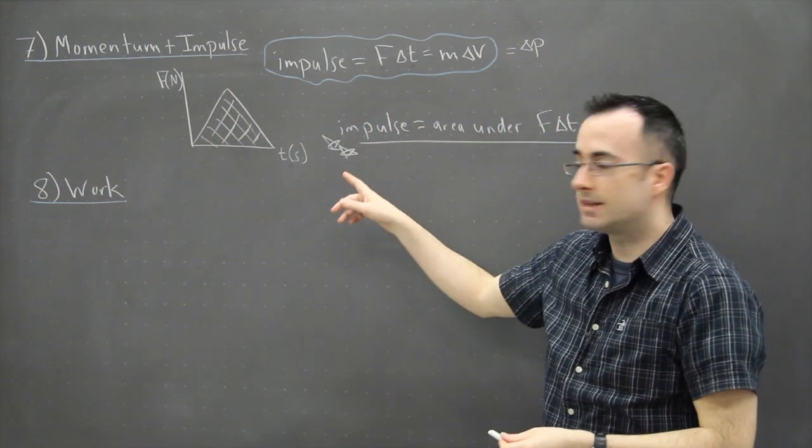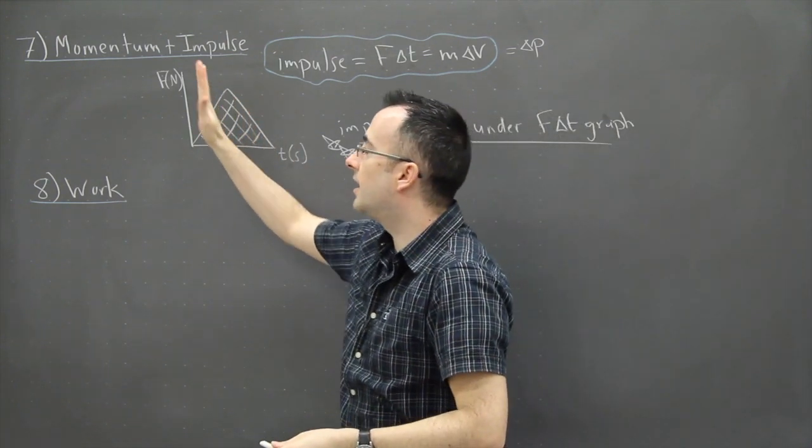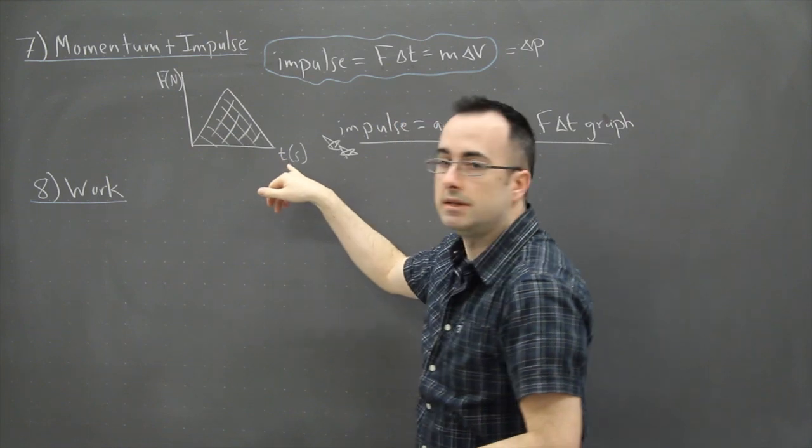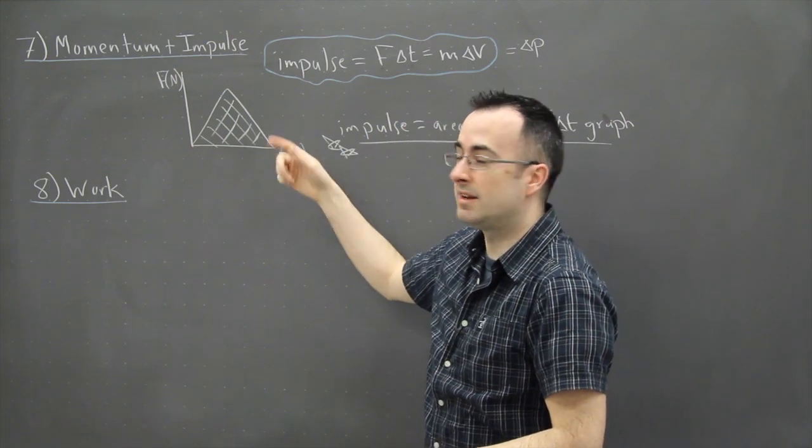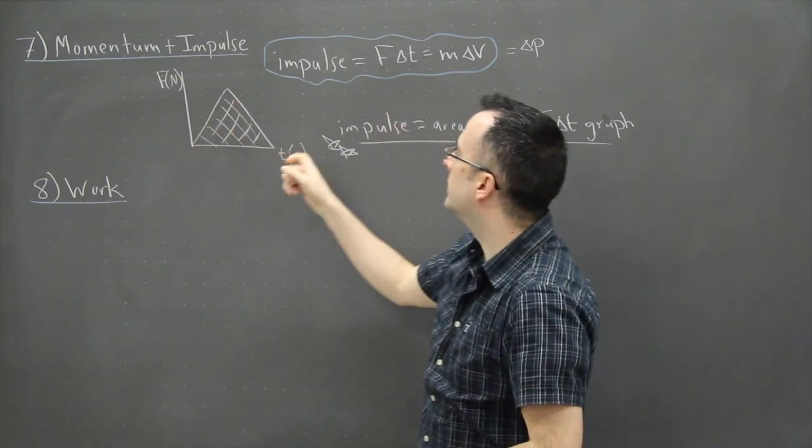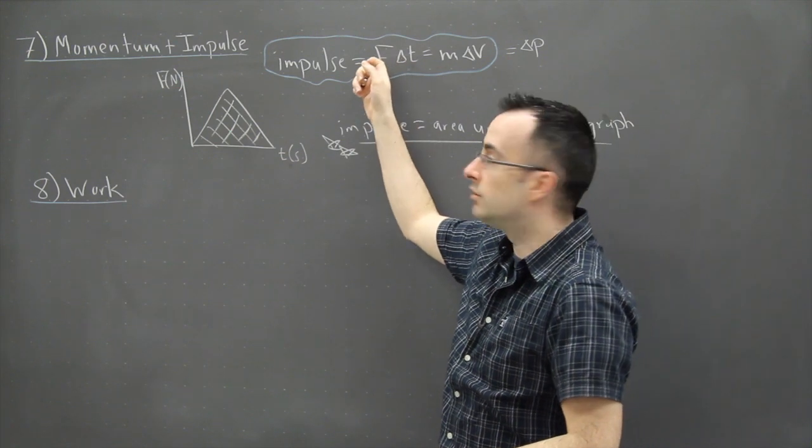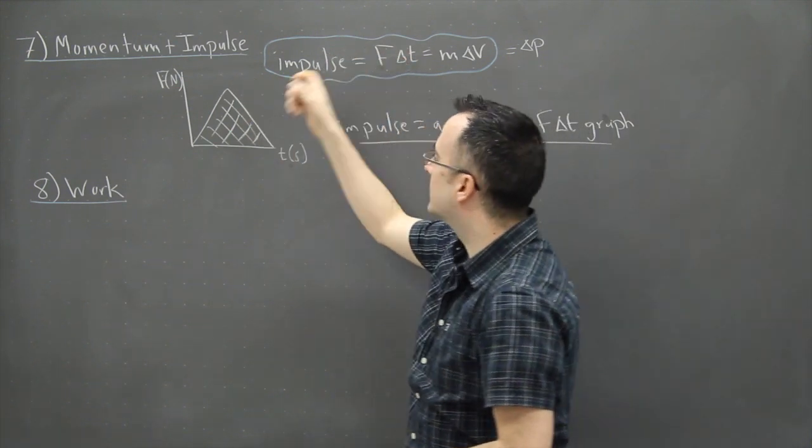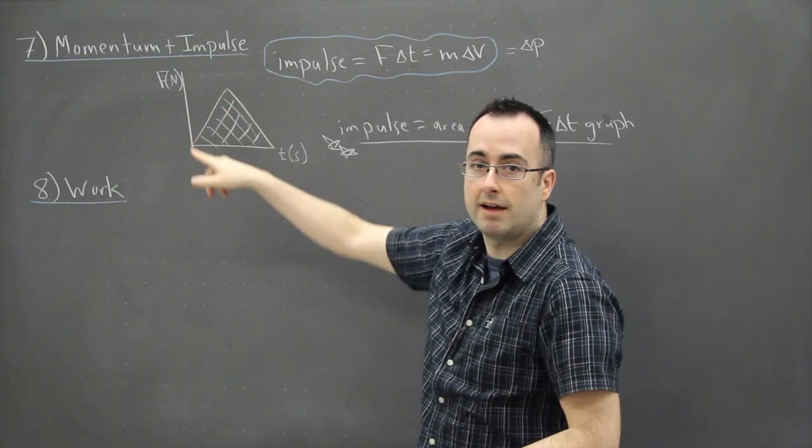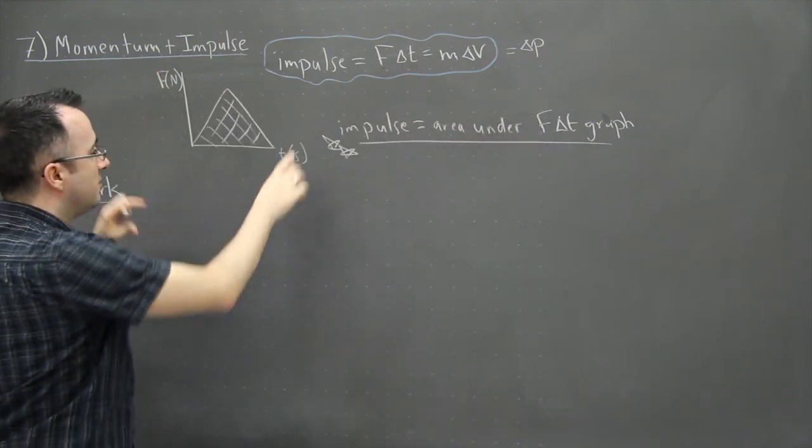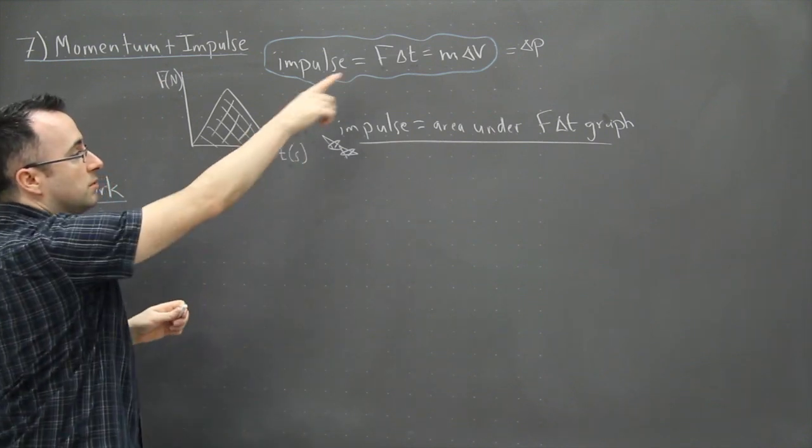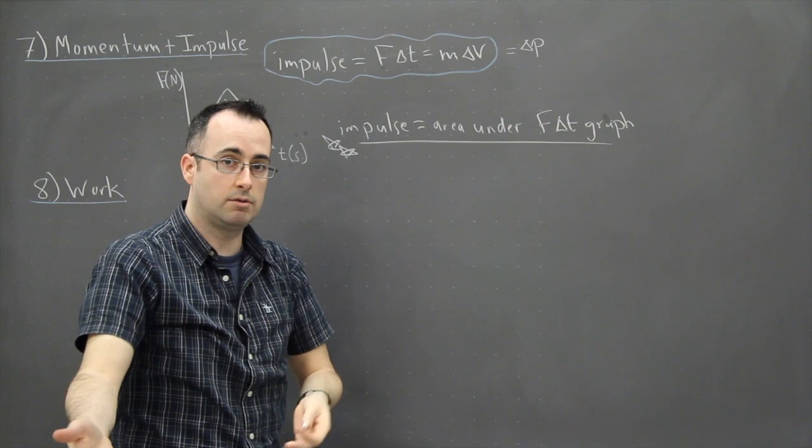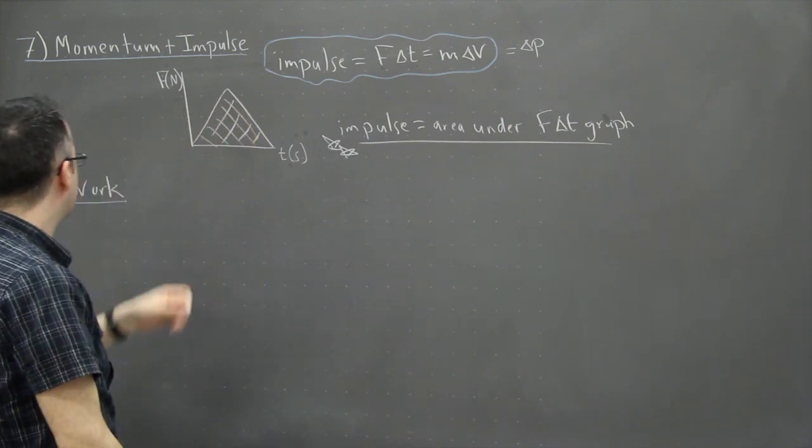The reason why it's the area is because when you take an area you multiply a height times a width, in other words F times T. If we were taking the gradient of something it would be F over T, and it's not F over T, it's F times T. Anytime you see units like that, the area is going to have units of this times this. So impulse is the area under an F delta T graph. That's it for impulse.